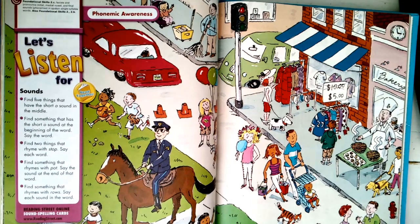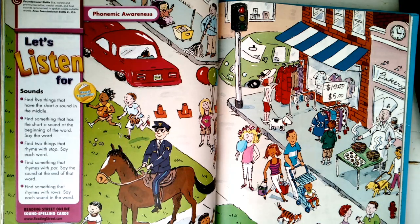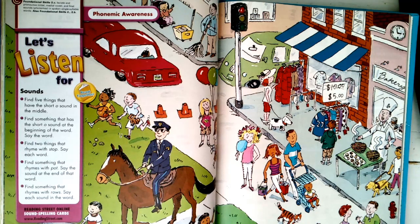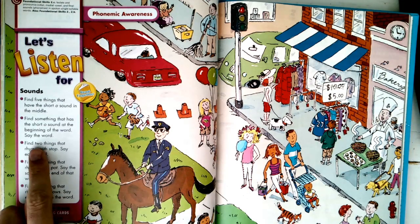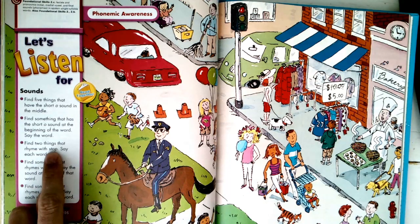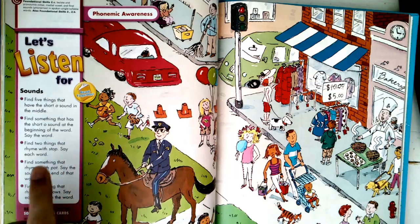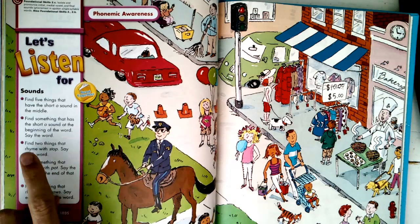So if we are on page 68 in our book, we see this picture. And there are a lot of things going on boys and girls. We're gonna find some things that might rhyme. So if I were to read this bullet point over here on the side, it says find two things that rhyme with stop. And I actually found three things before I started my video. I wonder if you can find the three things that rhyme with stop.